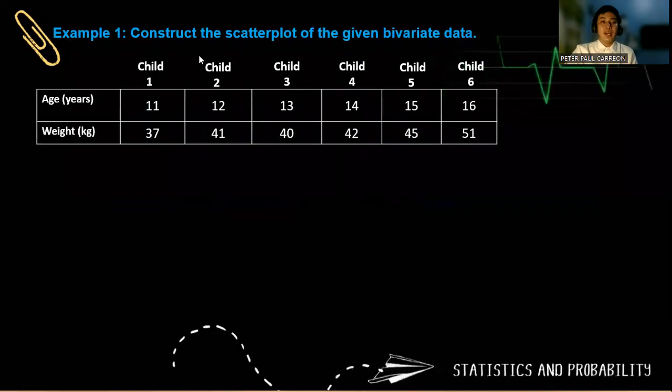So let's have example number one. Construct the scatterplot of the given bivariate data. So the two bivariate data are the age and the weight of each child. So we want to assume that the higher the age of a child, then the higher the weight.